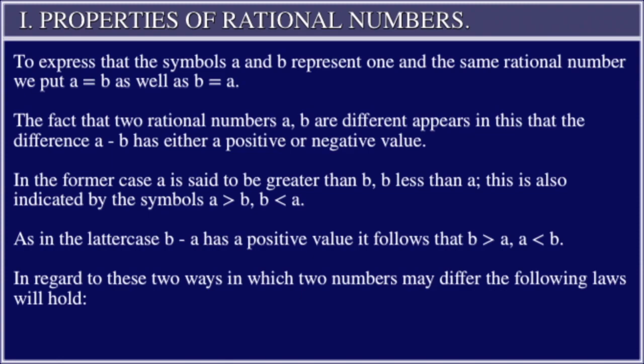The fact that two rational numbers a and b are different appears in this: that the difference a - b is either a positive or negative value. In the former case, a is said to be greater than b, b less than a.